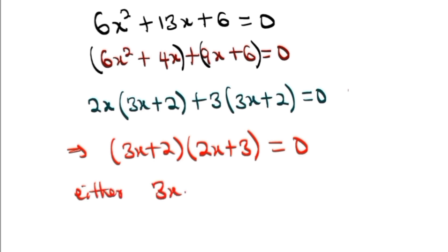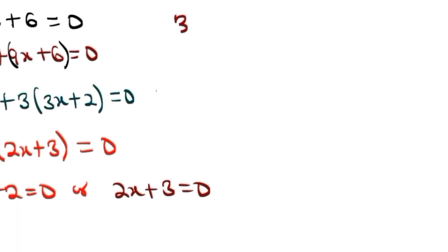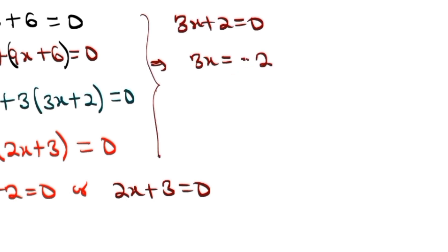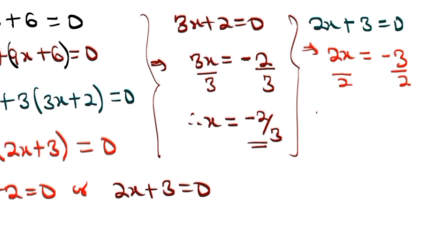We have a product of two numbers equal to zero, which implies either 3x + 2 = 0 or 2x + 3 = 0. From 3x + 2 = 0: 3x = -2, so x = -2/3. From 2x + 3 = 0: 2x = -3, so x = -3/2.